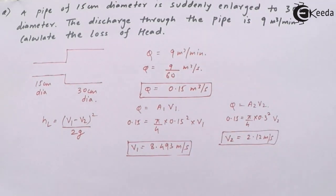Using the formula Q = A × V, you get the value of v1 and v2 as 8.49 and 2.12 meters per second. Now since you've got v1 and v2, just substitute into the formula and get the value of head loss.